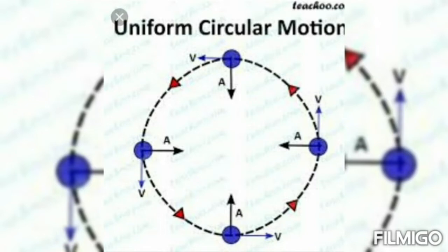Uniform circular motion: when an object is moving with a constant speed along a circular path, the velocity changes due to the change in direction — hence it is accelerated motion. Acceleration means change in velocity divided by time. The velocity changes because the direction changes even at constant speed, so we call it accelerated motion. The revolution of the Earth around the Sun is an example of accelerated motion.